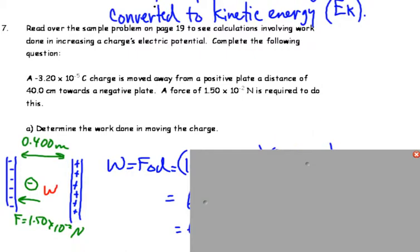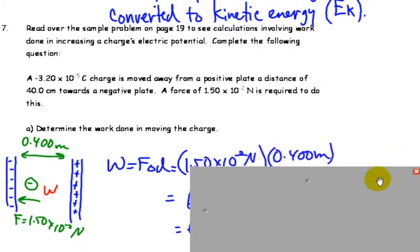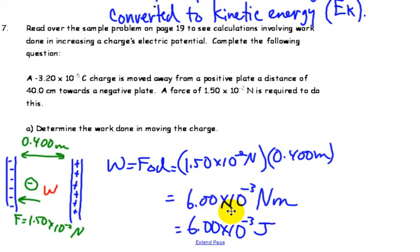This is right from unit 3, the work energy section, force times displacement, or force times distance, 6.00 times 10 to the minus 3 Newton meters, and of course, a Newton meter is a joule. So, we can apply that relationship that we've learned earlier for this.